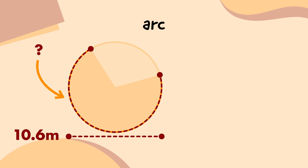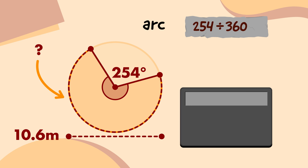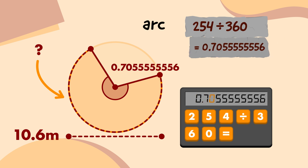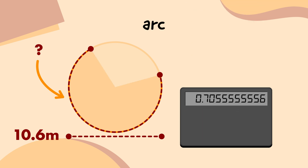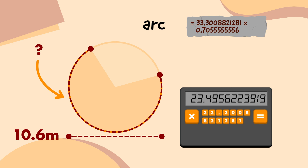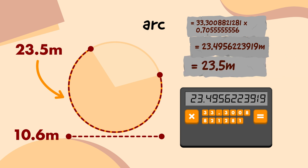Now I know the circumference, I can work out the arc length. The central angle of this portion is 254 degrees, so I'll divide 254 by 360. On my calculator, I'm going to type 254, press the divide button, type 360, and press the equals button, which tells me that this part of the circle is 0.7055555556 times as big as the whole circle. Then, I'm going to multiply that by the circumference, which gives me 23.4956223919. That means this arc of the third emblem circle is 23.5 metres long.